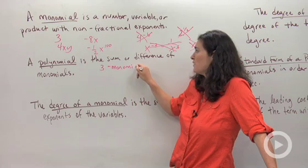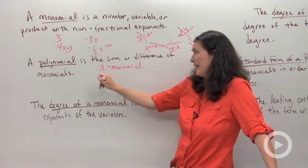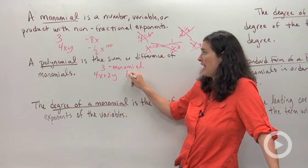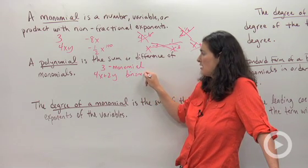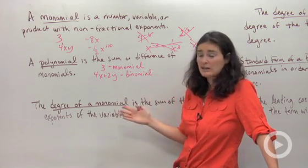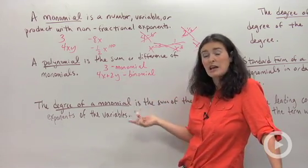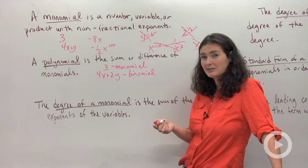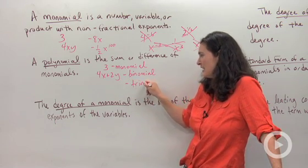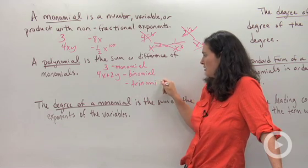If I have 2 things being added together, like 4x plus 2y, that's called a binomial. You guys might already know that mono means 1, bi means 2. Think about what it means 3. Do you know? Yeah, trinomial. What do you think a trinomial looks like? Any thoughts?